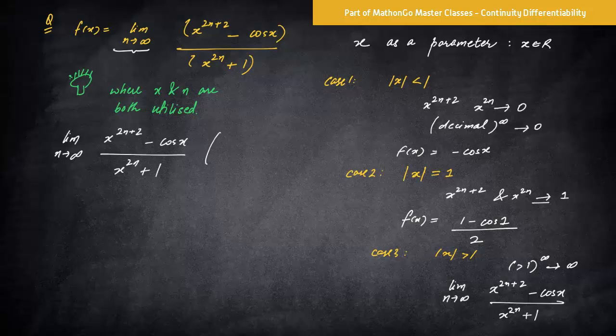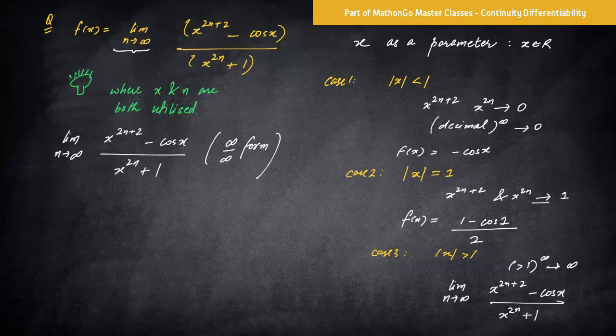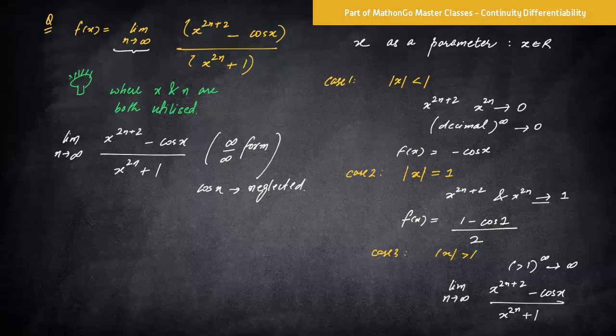Now, how do you solve? So this is basically infinity by infinity form. Do not get confused. So this basically, cos x doesn't matter what the cos x is, because the other terms are very, very big than this. So in fact, cos x would almost be neglected. I will tell you how it will be neglected because of this.